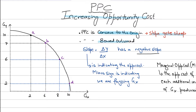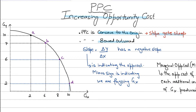Good X and good Y are on the X and Y axes, and as you're increasing good X your good Y has to be foregone — that is why the slope will always be negative. That negative slope is simply indicating the opportunity cost of producing more and more of good X.